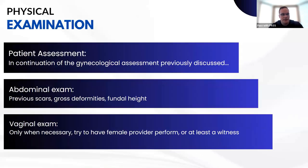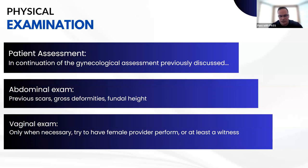In the physical examination, look at the patient's abdomen for any previous surgical scars indicating prior C-sections, and identify any gross deformities. We'll also identify fundal height, discussed on the next slide. Vaginal exam should only be performed when absolutely necessary — for me, that's when the patient says she feels the urge to push and I need to check for crowning. If at all possible, have a female provider perform this, and at minimum have a witness present in the back of the medic unit.